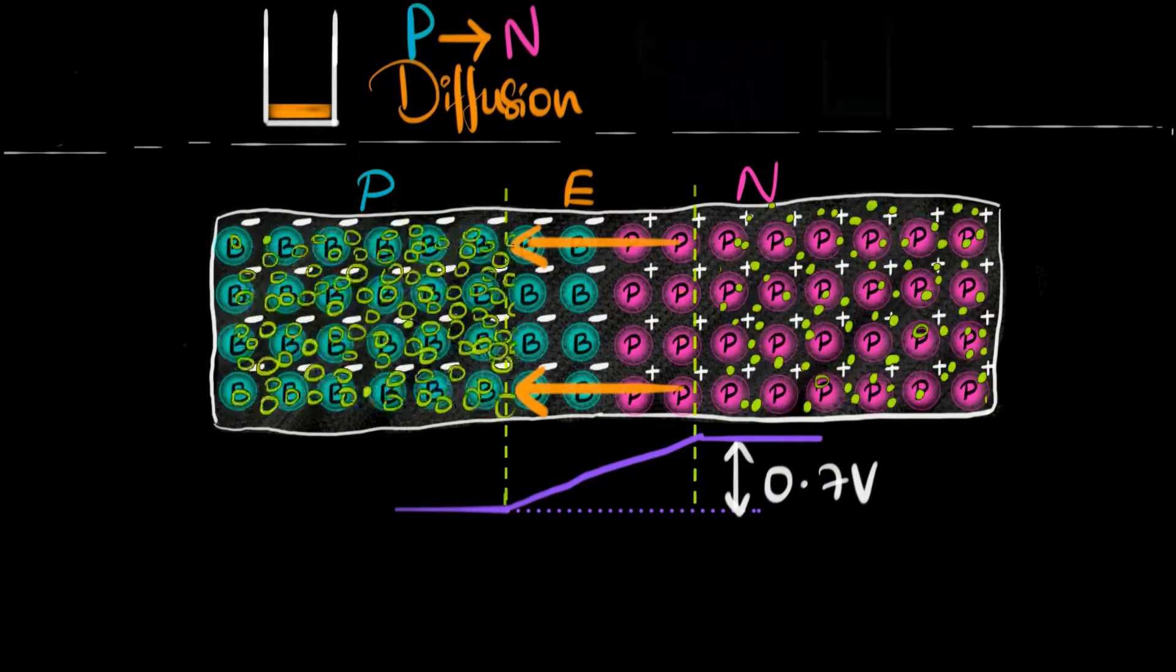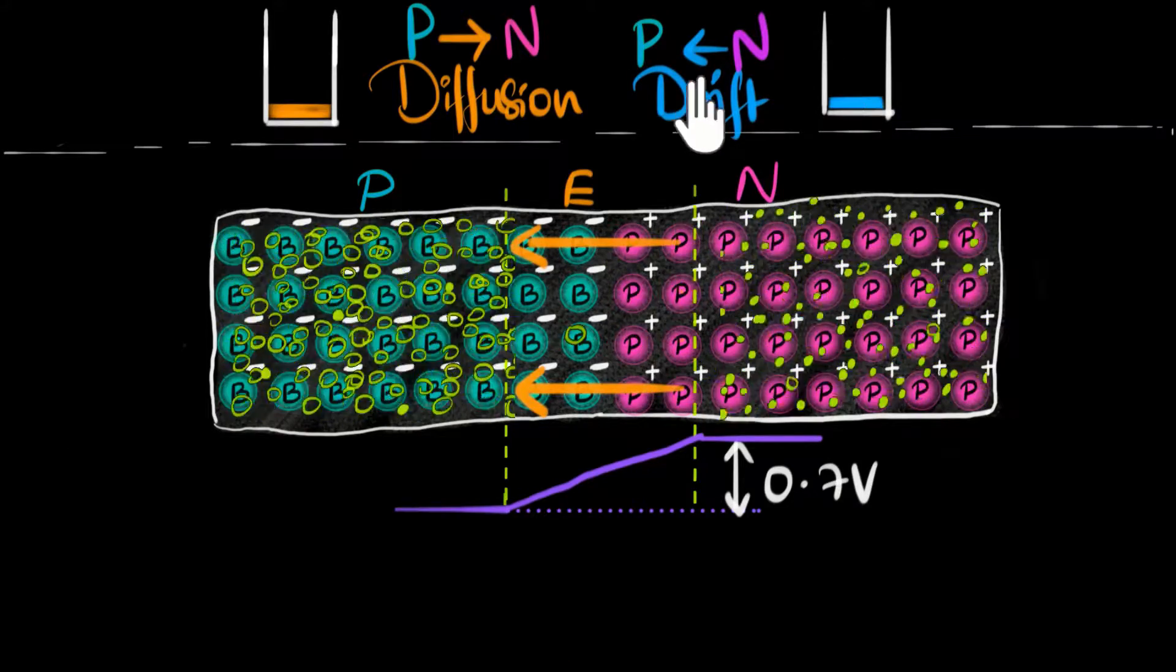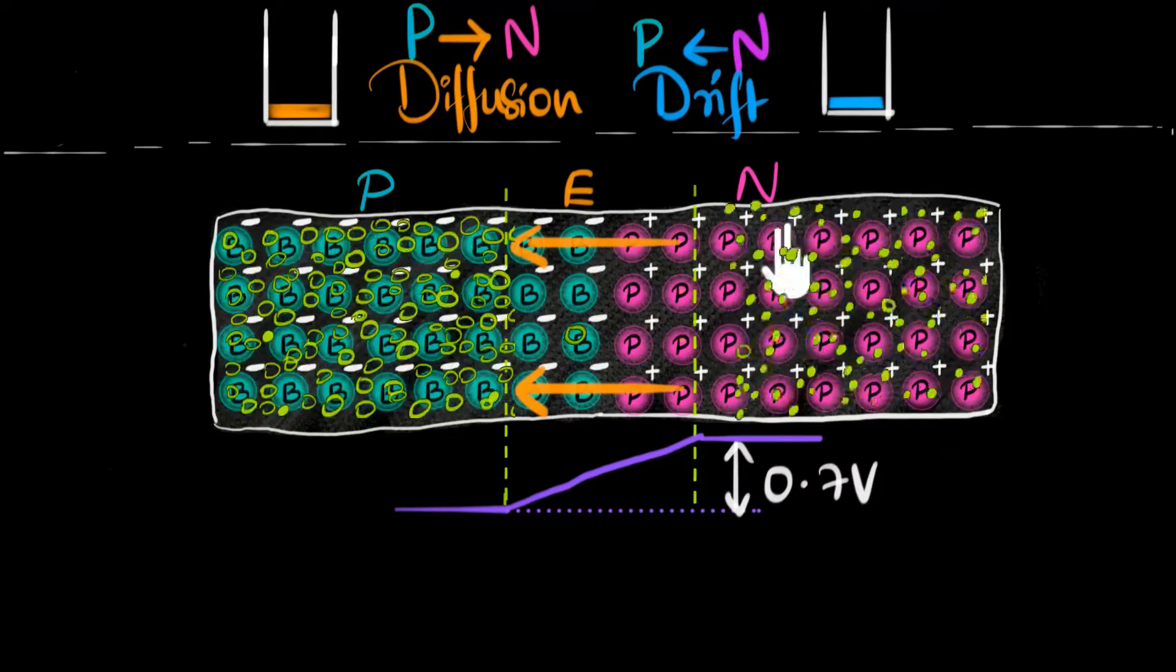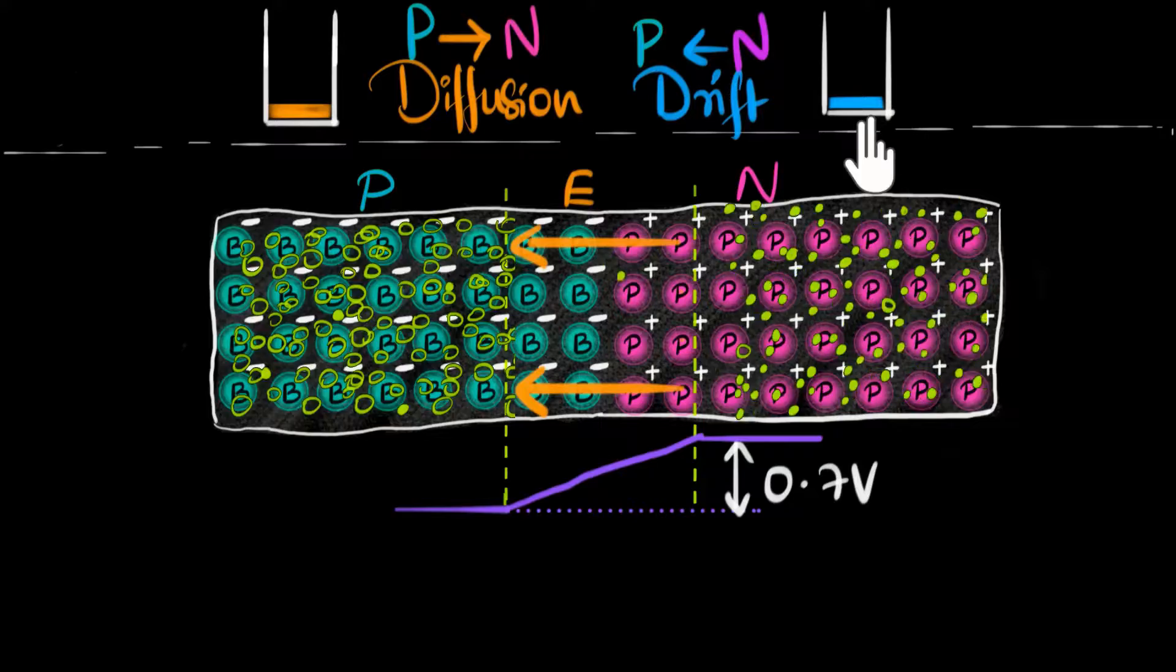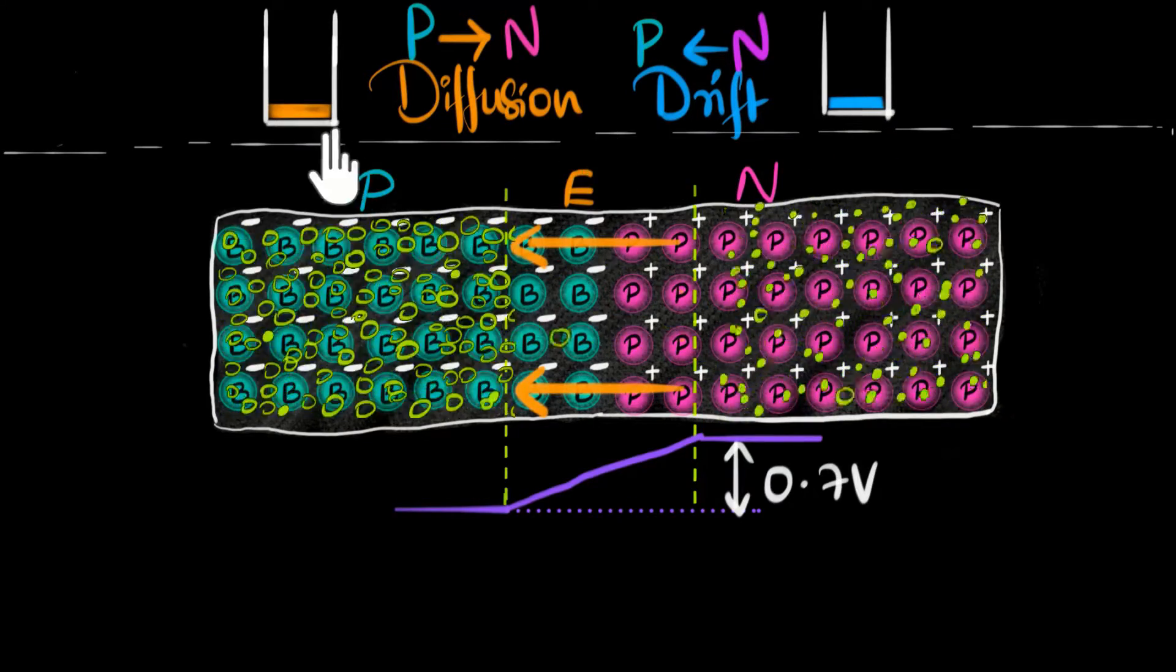The minority charge carriers end up moving in the opposite direction, which causes a second kind of current. We call this drift current. That current is from N to P in the opposite direction. This is the indicator, and it's very low because minority charge carriers are very low to begin with. At equilibrium, the two currents are exactly equal to each other and opposite, and so the total current is zero.